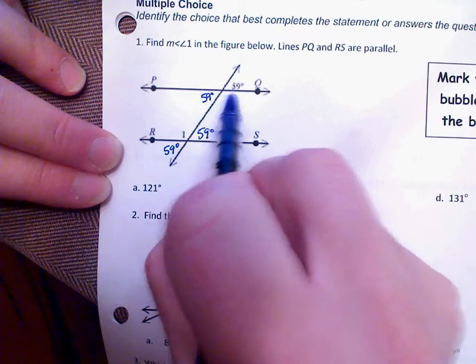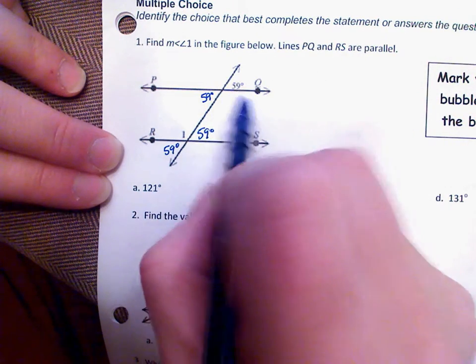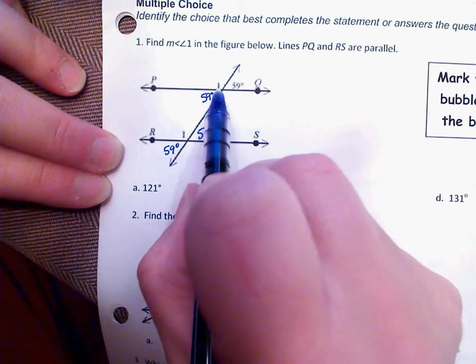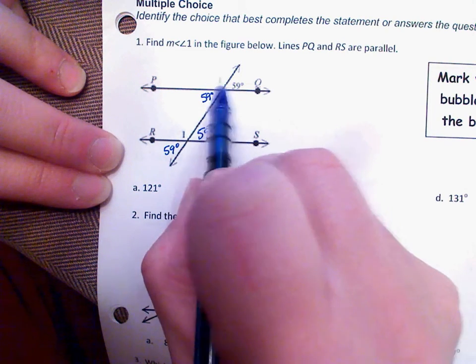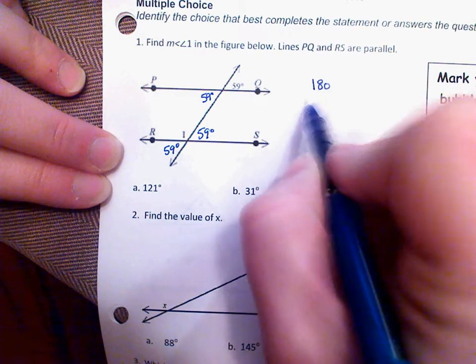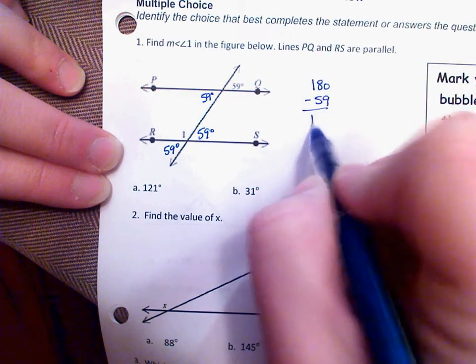We can see that the obtuse angle together with the acute angle make a linear pair. They make a line together. So we know that linear pairs are supplementary. So to find the obtuse angle, all we have to do is subtract 59 from 180, which gives us 121.